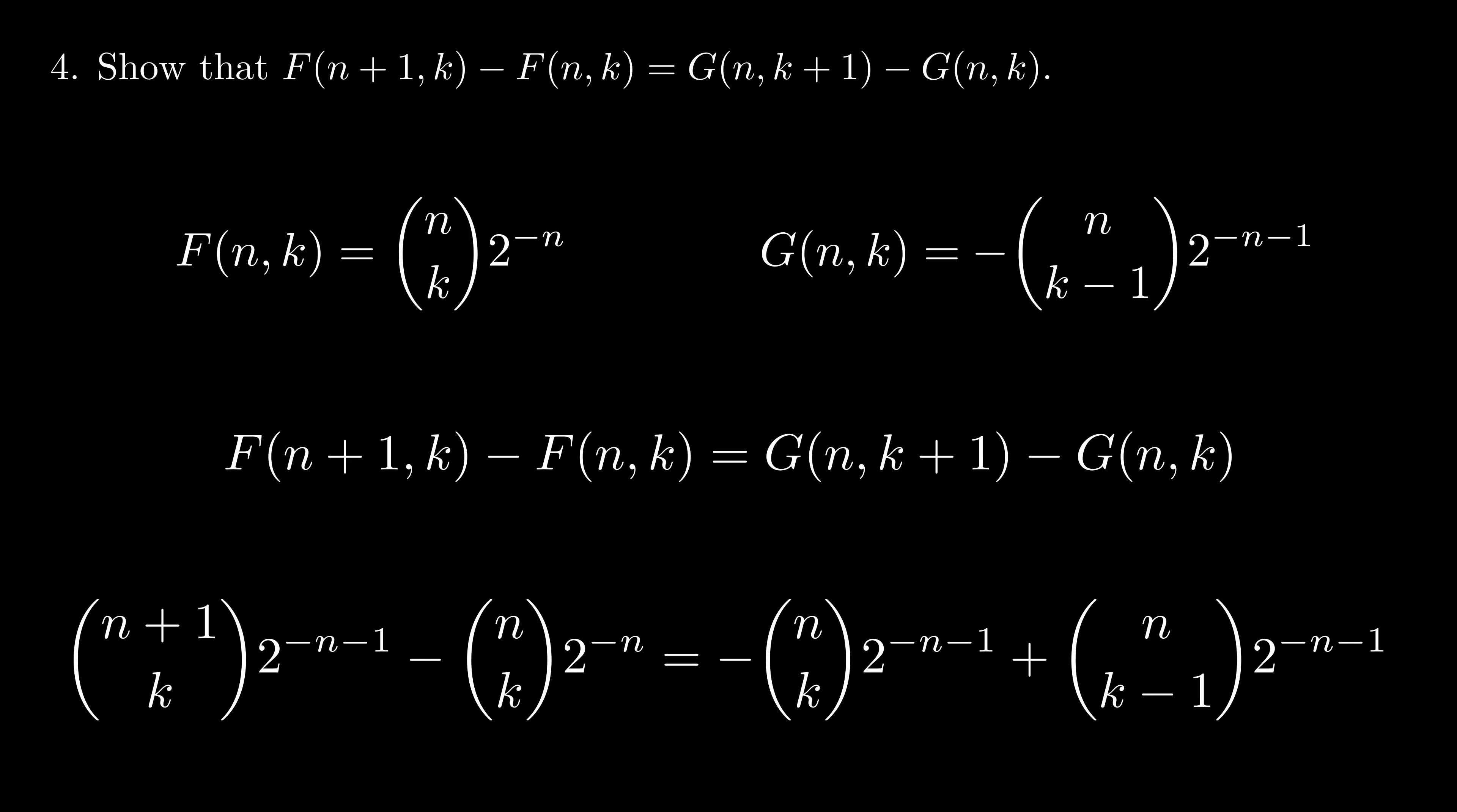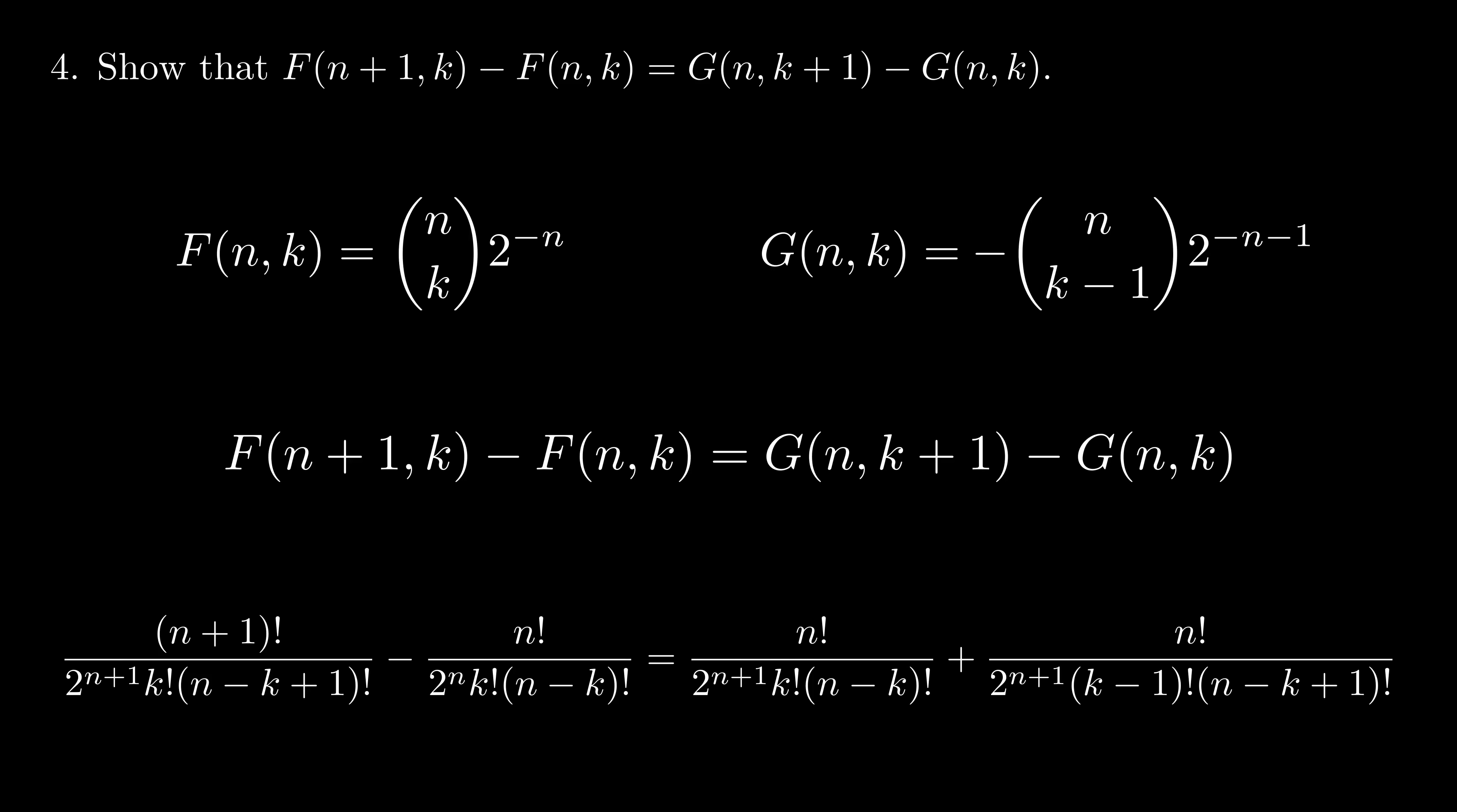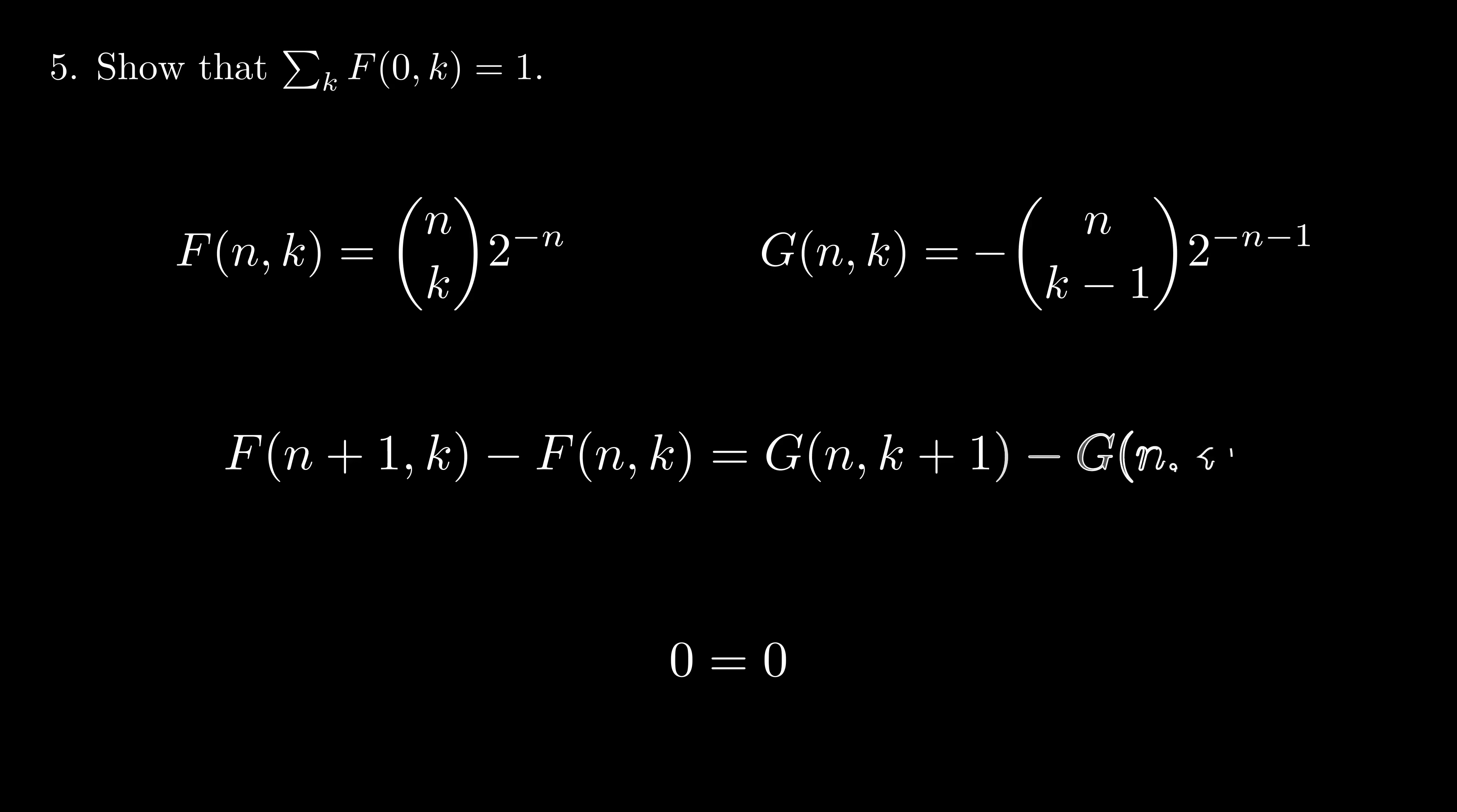All you have to do is write each binomial coefficient in factorials, multiply out the denominator, combine and cancel like terms, and when everything cancels, the identity is proven. Step 5. Simply plug in n equals 0. Once we compute the sum to be 1, thanks to step 4, we know that it is a constant sum of 1 for all n. We're done.